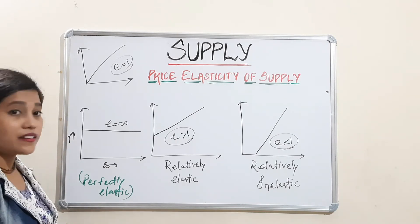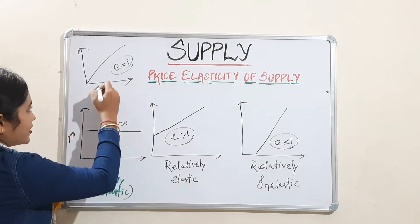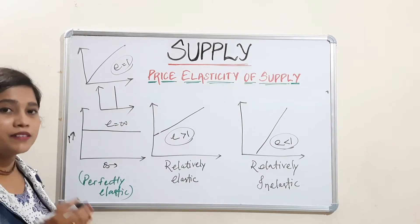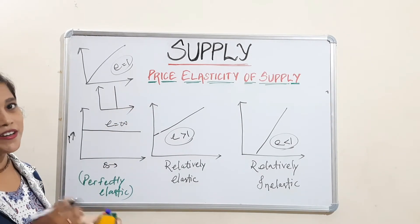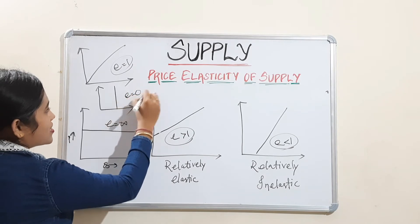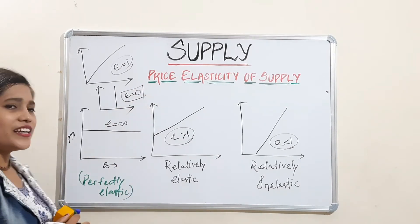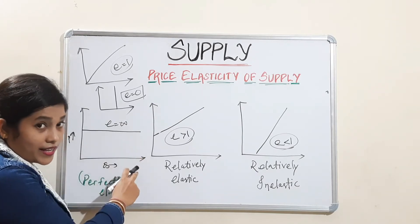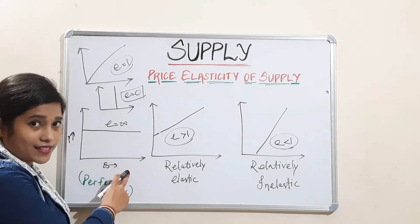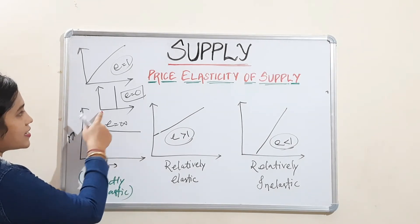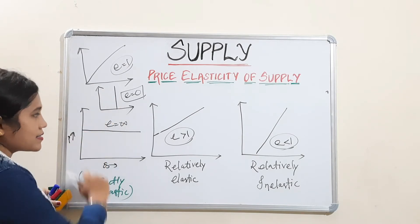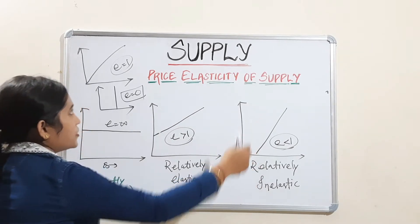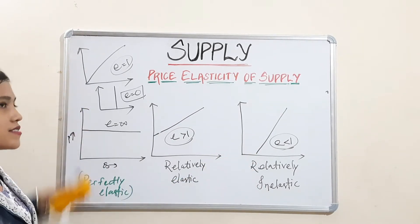Next, perfectly inelastic: a vertical curve parallel to the y-axis, just like we studied in the demand concept. Here elasticity will be 0. So to summarize the shapes: perfectly inelastic is vertical, perfectly elastic is horizontal, relatively elastic is flatter, relatively inelastic is steeper, and unitary elastic passes through the origin.